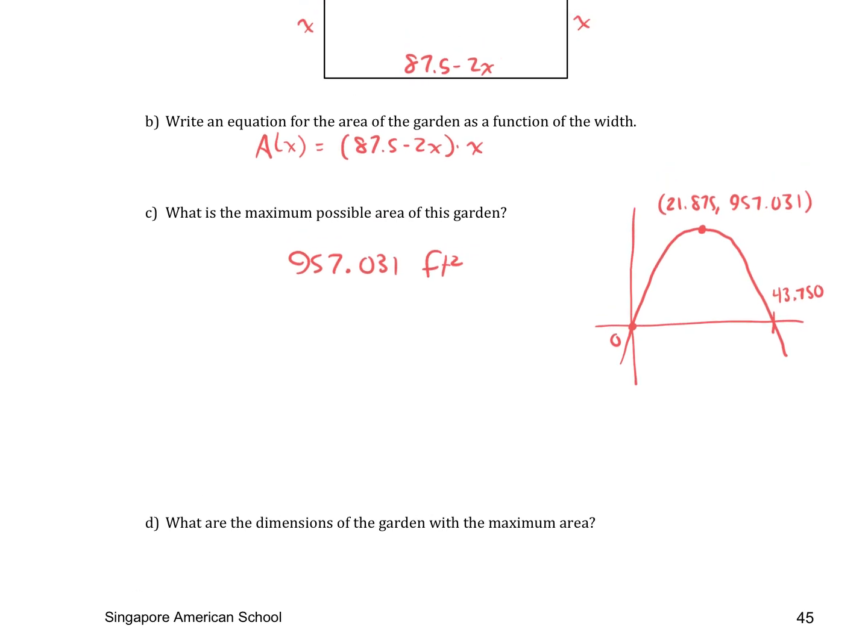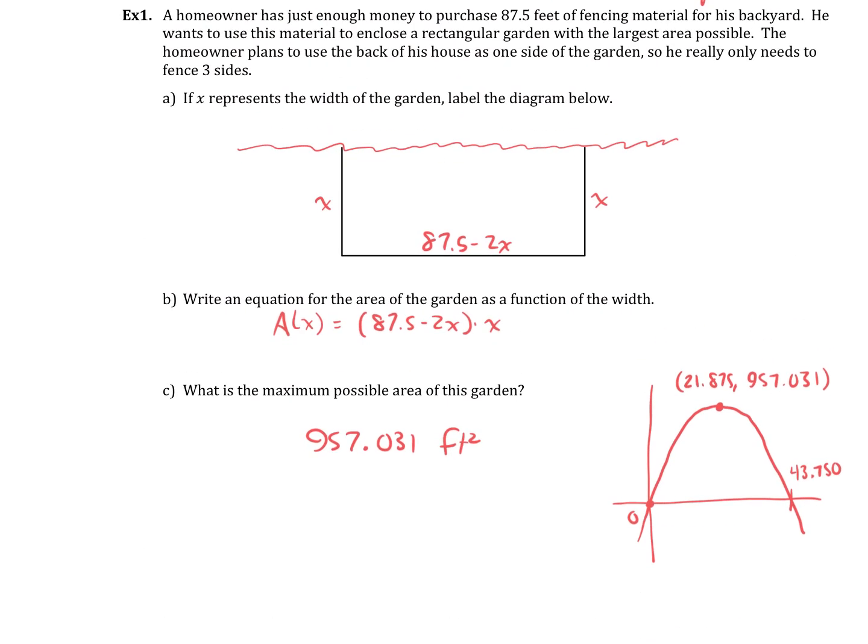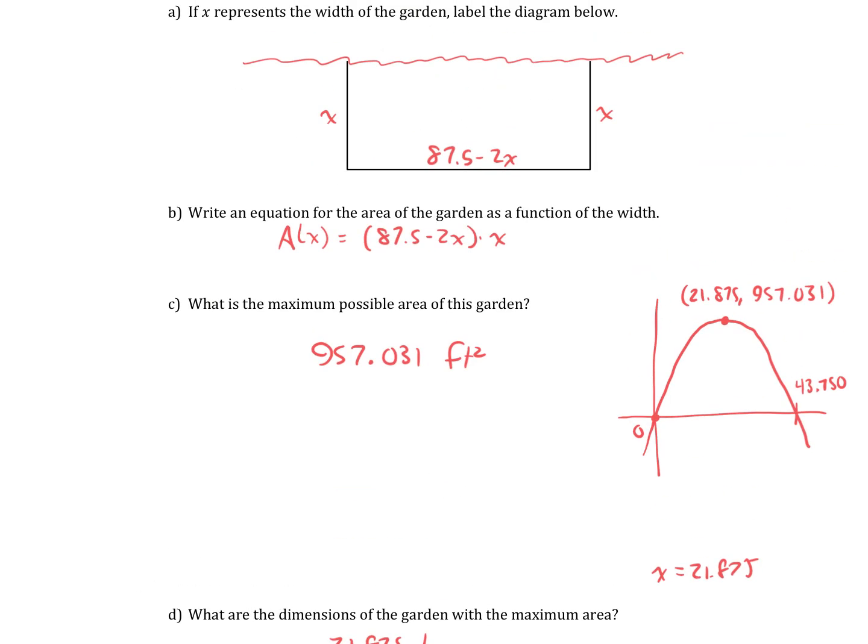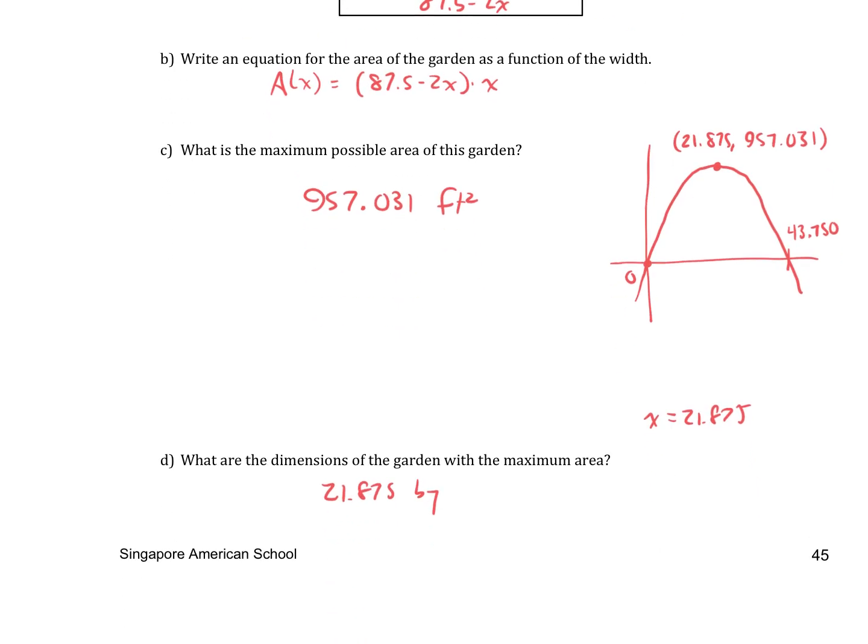And I believe there's one more question. What are the dimensions? Well, x has to be the 21.875. So the dimensions, if you look back at this picture and what the dimensions are, the width is 21.875 feet. But then the other one is 87.5 minus that. So 87.5 minus 2 times 21.875, and I get 43.75. And these are both feet.